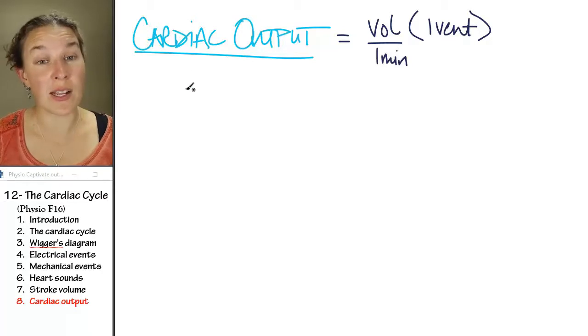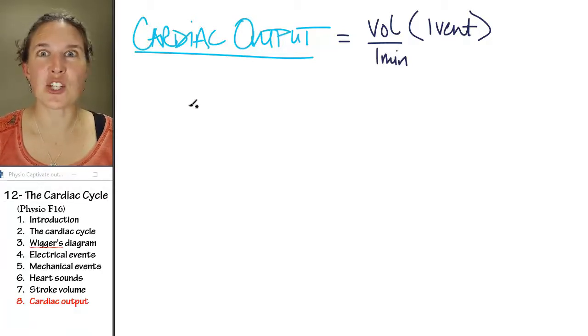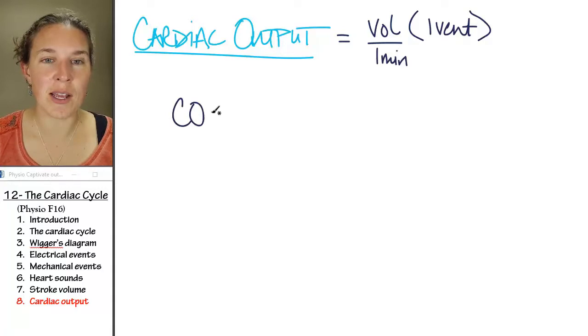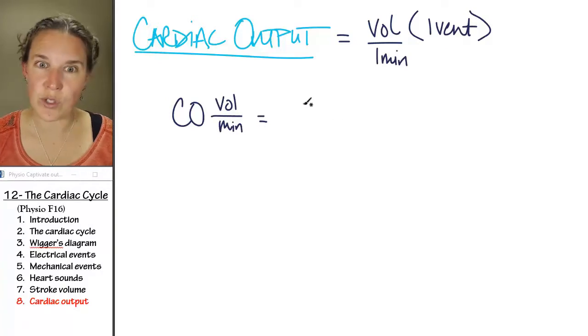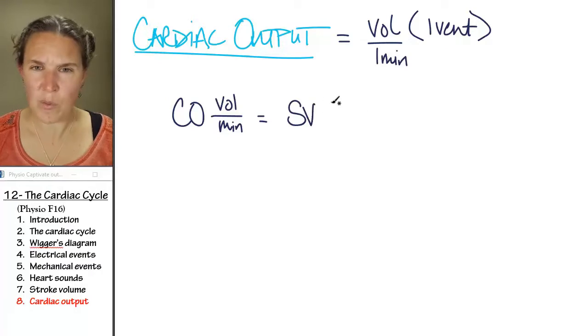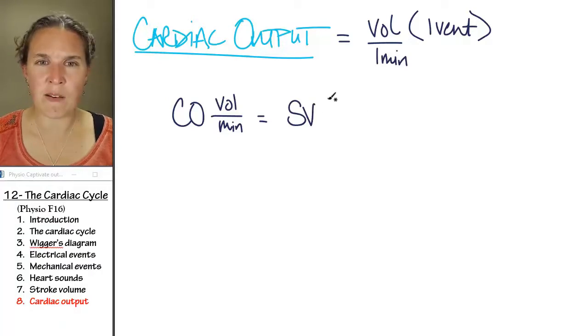So we can calculate the cardiac output. I'm going to show you my math. Cardiac output in volume over time per minute is equal to stroke volume. Remember that stroke volume was volume per beat.